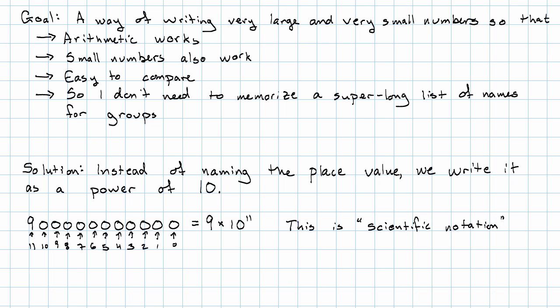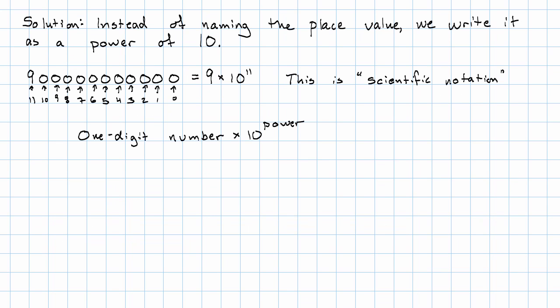What is the form of scientific notation? The form it takes is a 1 digit number times 10 to a power. Now there's some language here that we want to learn and use. The 1 digit number is called the mantissa or the significand. I'm going to prefer this term significand for the 1 digit number in scientific notation. But you may encounter this word in other contexts. It refers to the same thing.